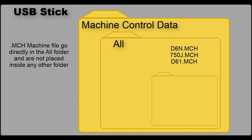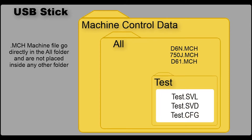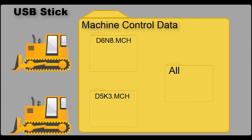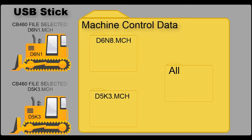Same as with the CB430 or CD700, you're going to have your job site folder — you'll name that — and inside of it you place your SVL, SVD, and CFG files. The reason we use the ALL folder is because it will transfer to any machine. On some machines, when looking at the USB stick, you may see individual folders for a D6N or D5K or specific machines. Trimble created those as a way to separate data, so if you only wanted certain designs on certain machines, operators would only get the files they needed.